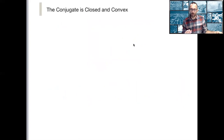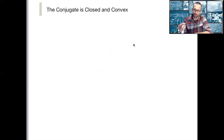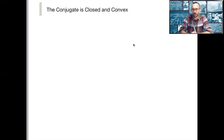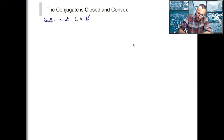What we want to work towards is understanding what the conjugate of the conjugate looks like. The conjugate of any function, whether convex or not, is convex and also has a property called closed. Let me give a brief review of an important concept from point set topology: a set being closed. Recall that a set C subset of R^n is closed if it contains all its limit points.